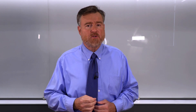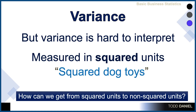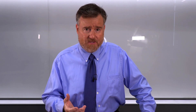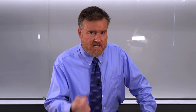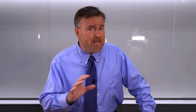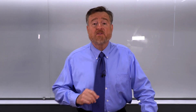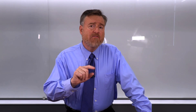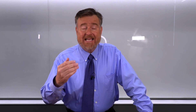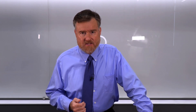But there's one problem with the variance, and that is it's hard to interpret. The variance of 6.33 would be interpreted as these dogs own an average of 5 toys with a variance of 6.33 squared dog toys. If we were measuring something about ages, the variance would be 20 squared years — that's really difficult to interpret. How can we get away from these squared units into the original units of our data set?